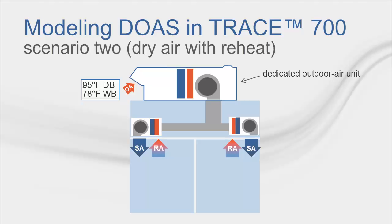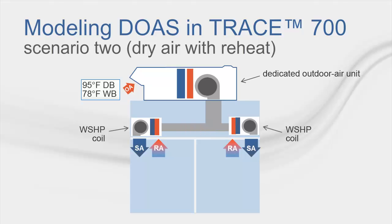For our second scenario, let's consider a building served by water source heat pumps with a DOA that delivers conditioned outdoor air to the individual heat pumps. The conditioned outdoor air from the DOA mixes with the return air before entering the water source heat pumps. During the cooling season, the DOA dehumidifies the outdoor air to a 52-degree dew point and then reheats it to 70 degrees dry bulb. During the heating season, the DOA heats the outdoor air to 68 degrees.